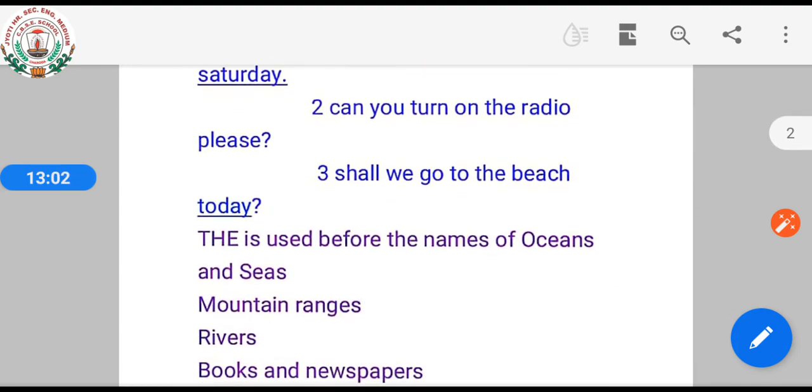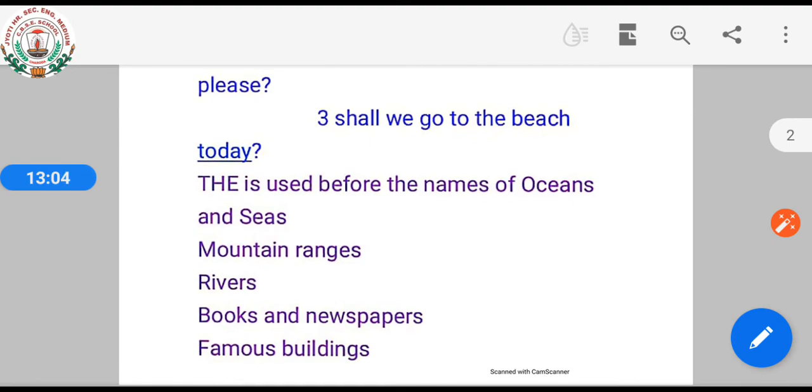Let's see more examples. 'The' is used before the names of oceans and seas, mountain ranges, rivers, books and newspapers, famous buildings.